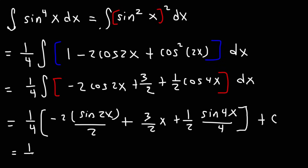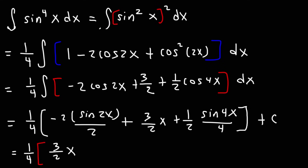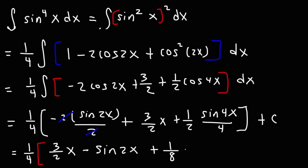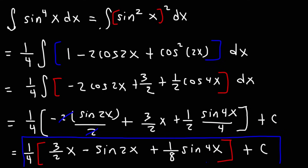Organizing the answer with the 1/4 in front: 1/4 times (3/2 x minus sine 2x plus 1/8 sine 4x) plus c. Distributing the 1/4 gives 3/8 x minus 1/4 sine 2x plus 1/32 sine 4x plus c. So this is the antiderivative of sine to the fourth x.